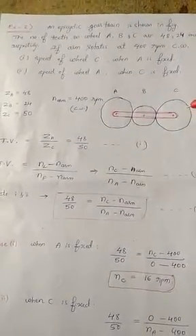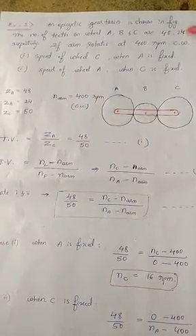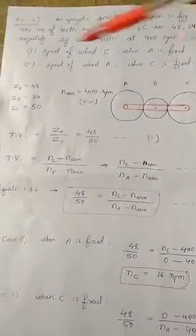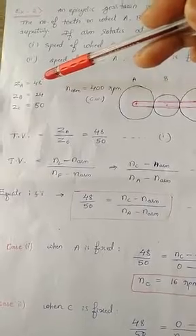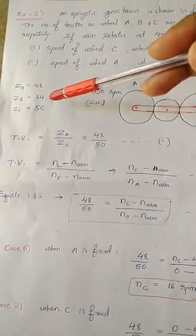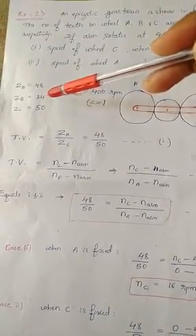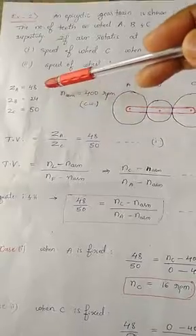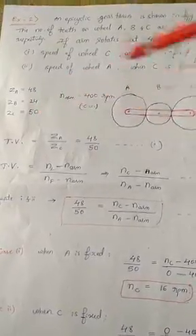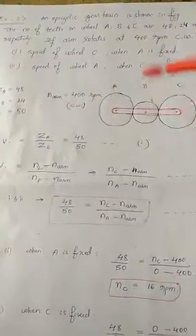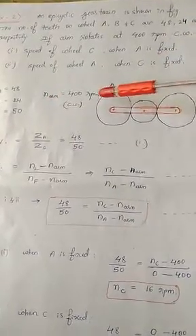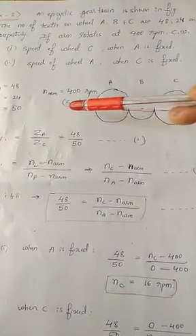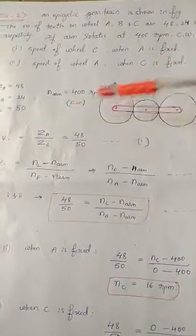Given data: the number of teeth are ZA = 48, ZB = 24, and ZC = 50 respectively. The speed of the arm, N_arm, equals 400 rpm clockwise — clockwise means positive.